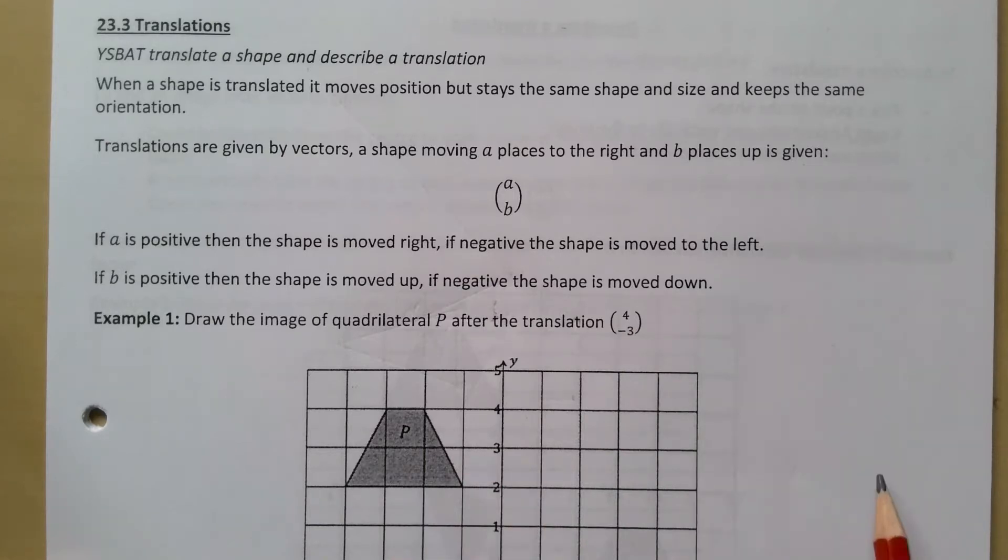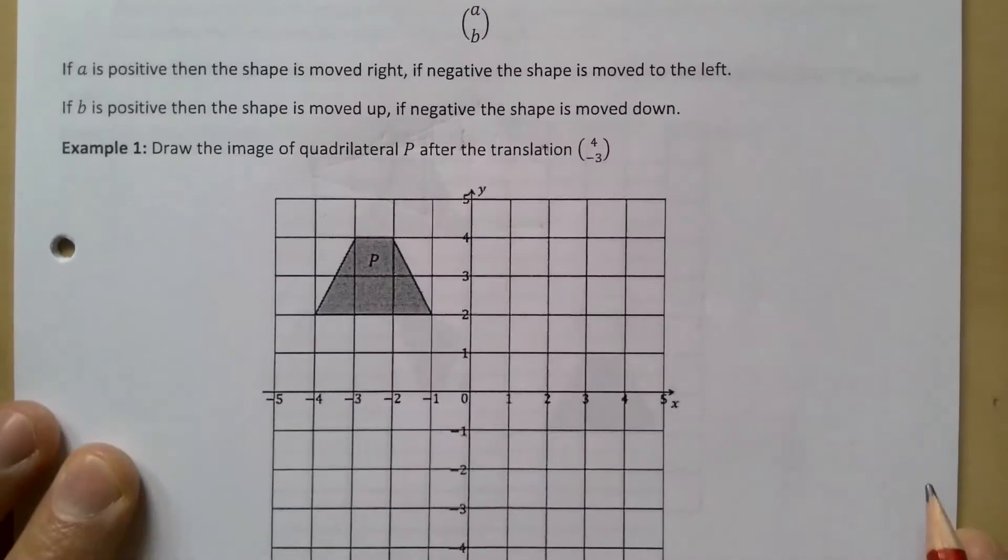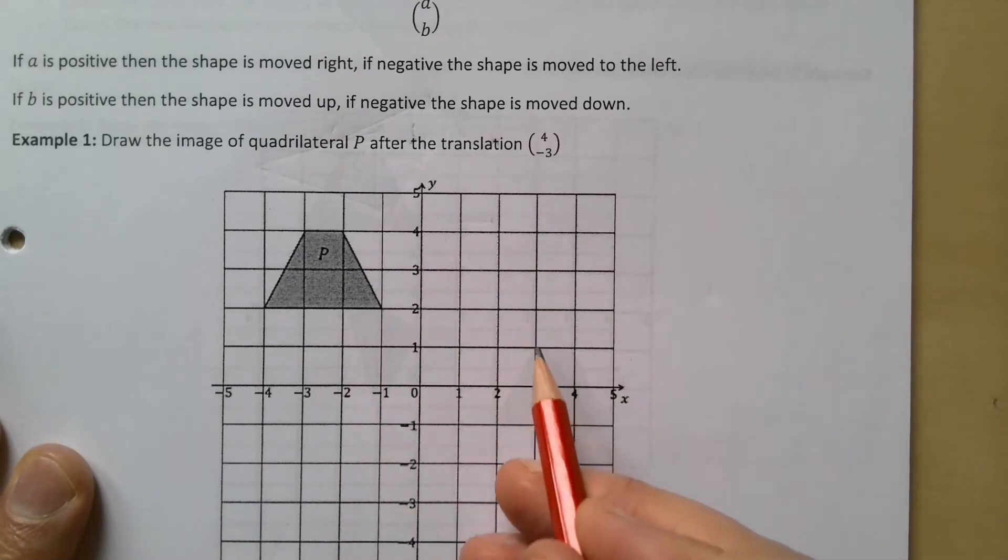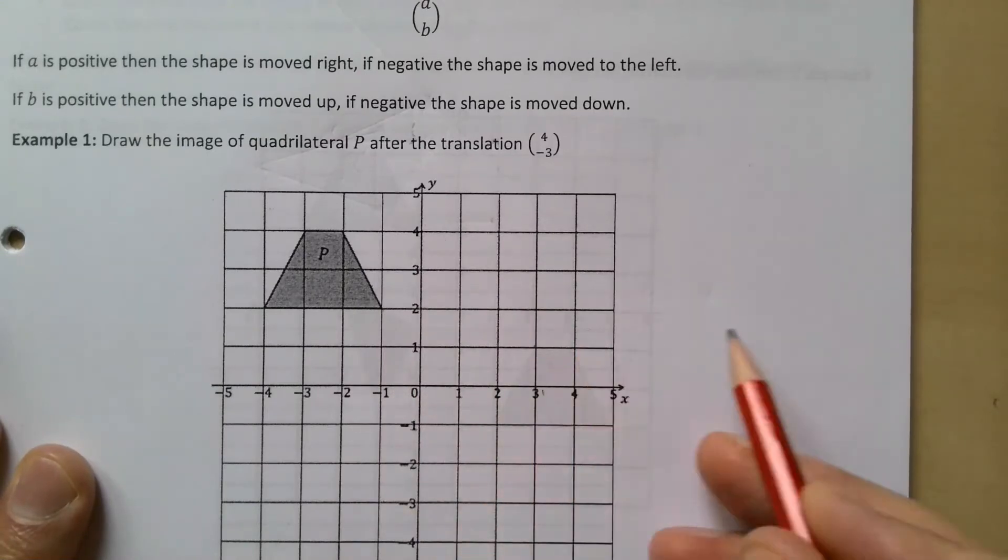And then minus 3 means it's 3 down. Now where you would make a mistake is people sometimes go across 4, 1 2 3 4, 1 2 3, and then they draw the shape up here. But it's each particular point that moves, so sometimes it's better moving a couple of points or just realizing which point it is you've moved.